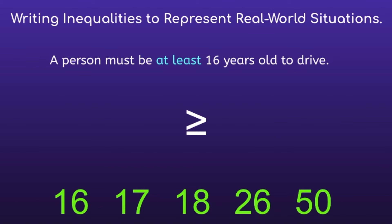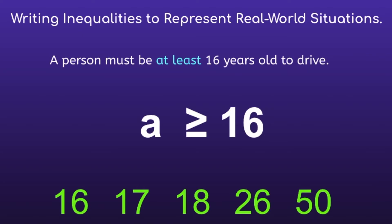We know that they have to be at least 16 years old, so we can include the 16 on the right side. The last thing we need is a variable. Since we are talking about someone's age, I'm going to use the variable A. This inequality is A is greater than or equal to 16 — or the person's age needs to be greater than or equal to 16 in order to drive.